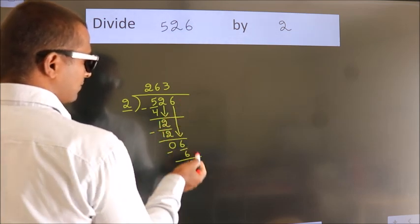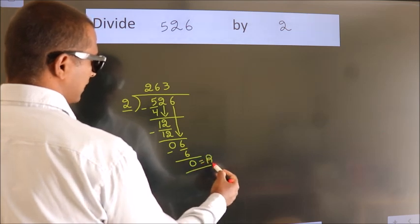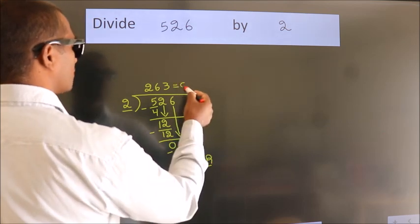No more numbers to bring it down. So we stop here. This is our remainder. This is our quotient.